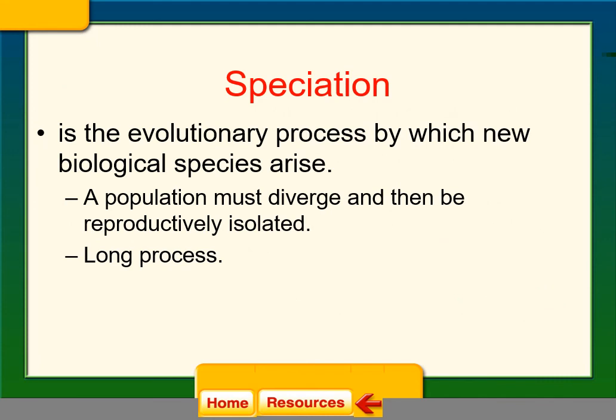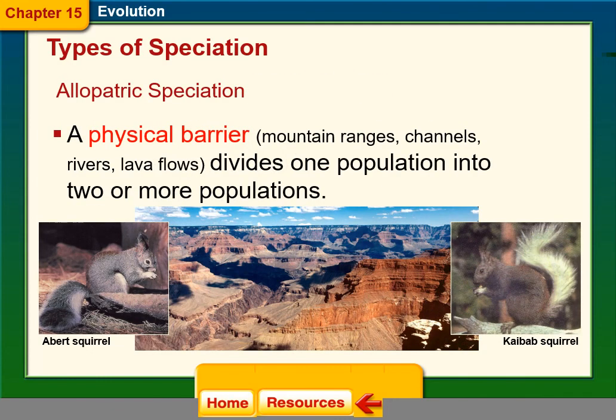Speciation is the evolutionary process by which new biological species arise. A population must diverge and become reproductively isolated, and it is a long process. A physical barrier such as mountain ranges, channels, rivers, or lava flow can divide one population into two or more. For example, the Grand Canyon has separated two squirrel populations to the point where they are now two different species.